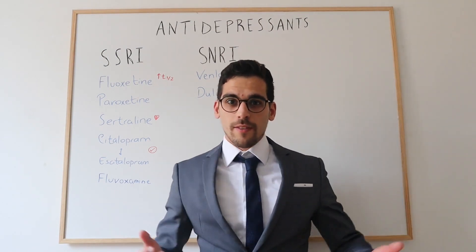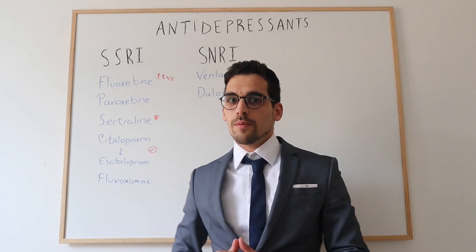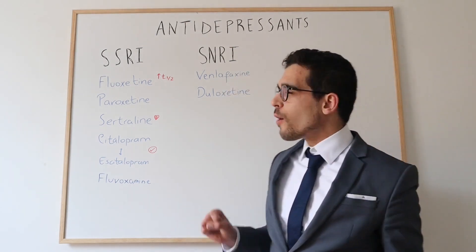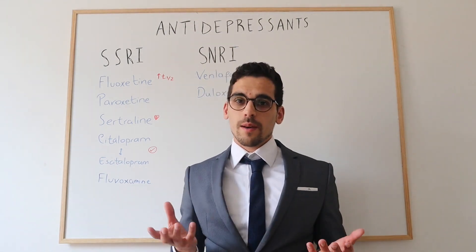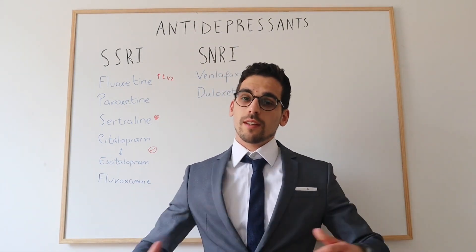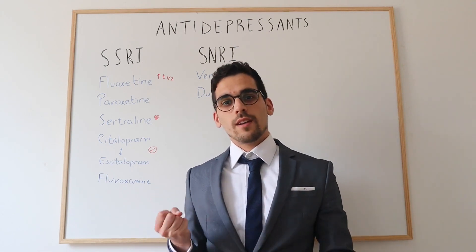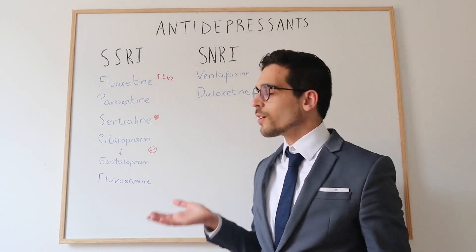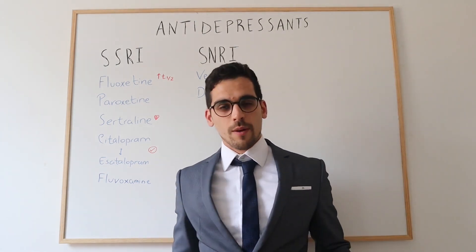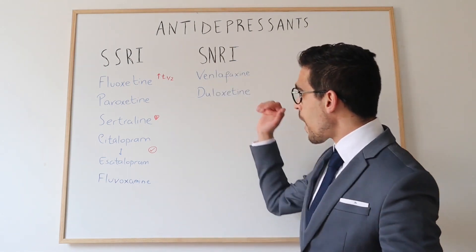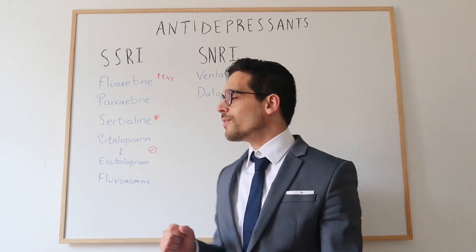Let's start with venlafaxine. Venlafaxine is quite widely prescribed and is a very good antidepressant. However, we need to keep an eye on hypertension, because increasing noradrenaline in the synapse can affect the cardiovascular system — raising heart rate and causing vasoconstriction, so blood pressure can go higher. That is not a reason not to prescribe it, but if a patient has a history of hypertension it should be avoided.